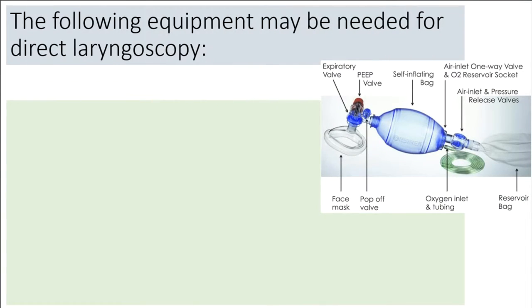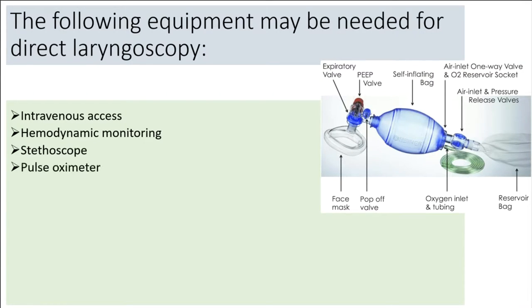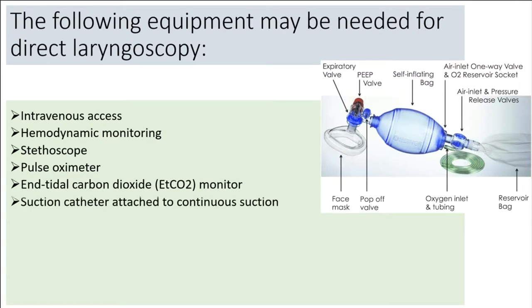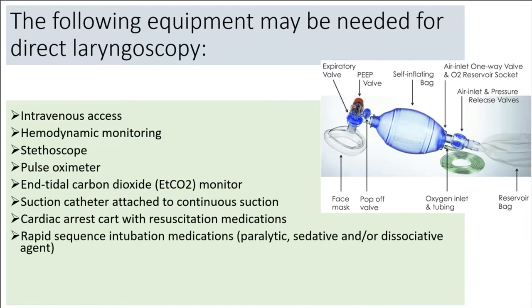The following equipment may be needed for direct laryngoscopy: intravenous access, hemodynamic monitoring, stethoscope, pulse oximeter, end-tidal carbon dioxide (etCO2) monitor, suction catheter attached to continuous suction, cardiac arrest cart with resuscitation medications, rapid sequence intubation medications including paralytic, sedative, and/or dissociative agent.